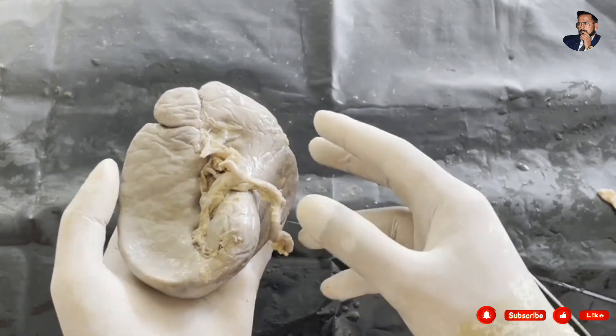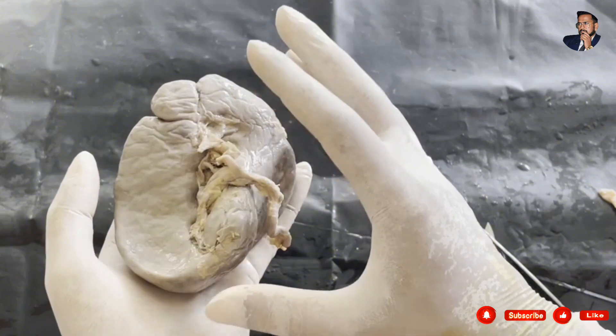It can be wedge shape, triangular or tetrahedral shape. Measurement is 1 by 3 by 5 inches.